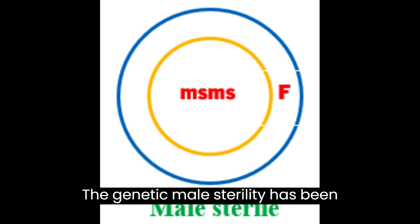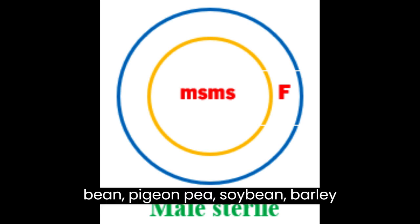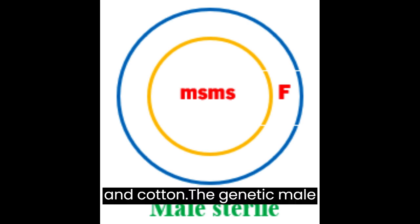Genetic male sterility has been reported in tomato, potato, lima bean, pigeon pea, soybean, barley, and cotton.